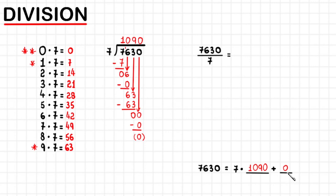The remainder is always less than the divisor and it is 0 or greater than 0. In this case, the remainder was 0. So we can say that 7630 is divisible by 7 and 7630 divided by 7 equals exactly 1090.